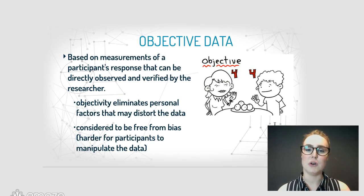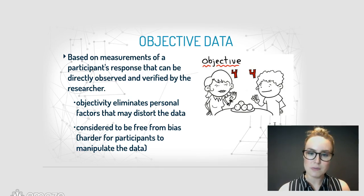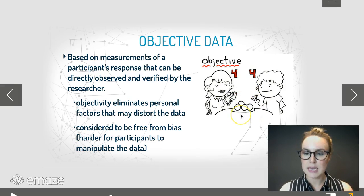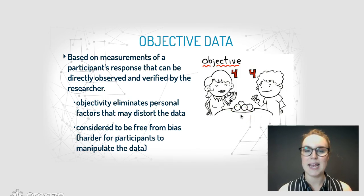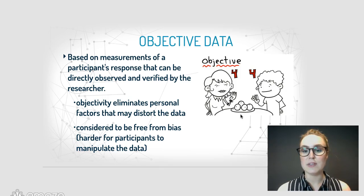So let's start with the definition of objective data. These are data that are based on measurements of a participant's response that can be either directly observed and verified by a researcher. For example, looking at how many oranges are on a plate — there are four. There's no way to negotiate that or have different interpretations; they can be observed and the researcher can also verify it.